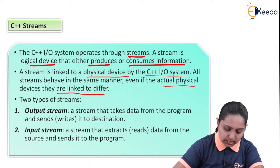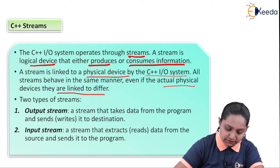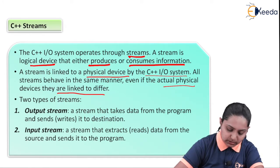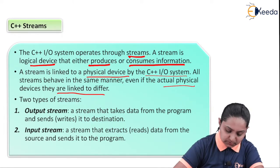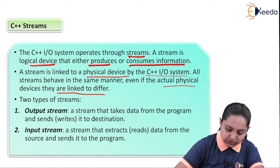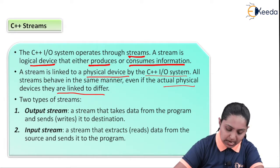Output stream: a stream that takes the data from a program and sends or writes it to the destination. Input stream: a stream that extracts or reads the data from the source and sends it to the program.